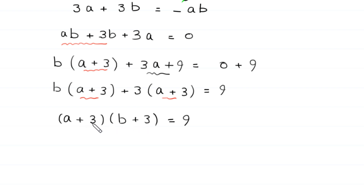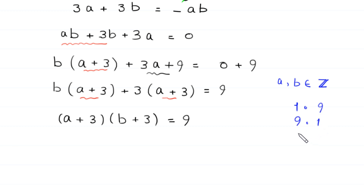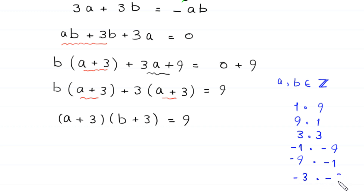We have a product of two factors on the left-hand side, and both a and b are integers. So 9 can be factorized as: 1 times 9 (case 1), 9 times 1 (case 2), 3 times 3 (case 3), negative 1 times negative 9 (case 4), negative 9 times negative 1 (case 5), and negative 3 times negative 3 (case 6). This gives us 6 cases.